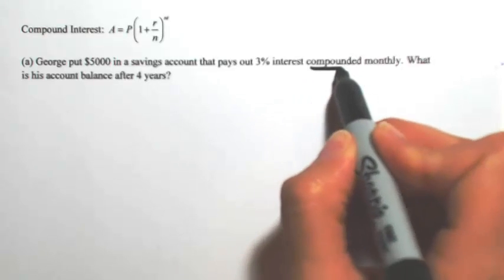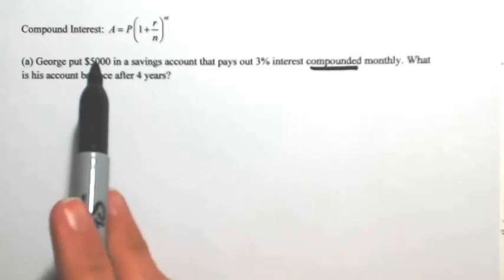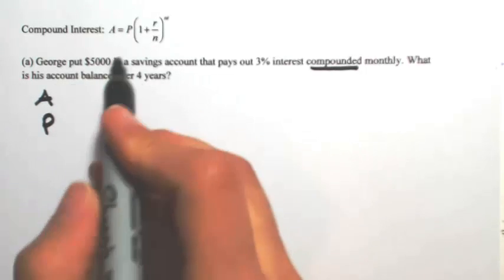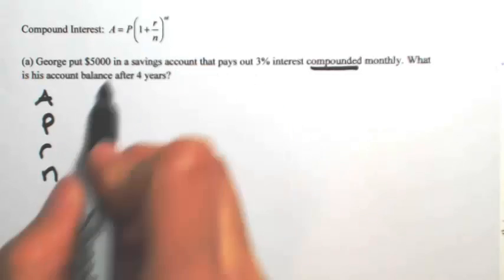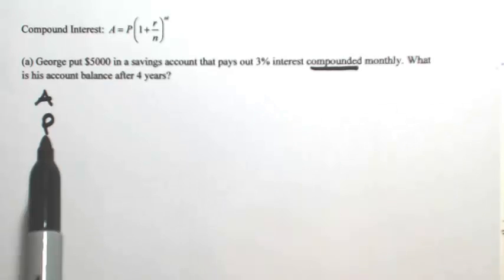Anytime we see this word compounded, we're going to use our compound interest formula. It looks pretty complicated, but keep in mind there's going to be five variables that you need to account for. So the A, the P, there's an R, there's an N, N repeats again, and then a T. So there's five variables that we need to fill in. We're going to have to find one of them, so there's going to be four variables that we know. Let's identify what everything means first of all.